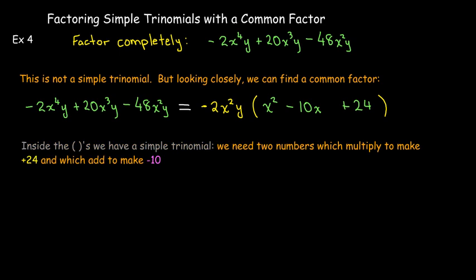We need two numbers whose product is positive 24 and sum is negative 10. Since the sum is negative but the product is positive, we must have two negative numbers — because a negative times a negative makes a positive, and a negative plus a negative makes a negative.